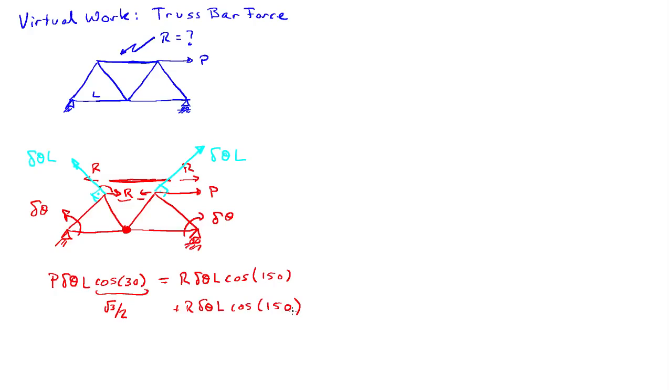And those two are going to add up together. So the cosine of 150 degrees is minus root 3 over 2. So clearing the delta thetas from both sides and the Ls, they all cancel out. I found out that R is equal to P over 2. So the force in the upper chord of this little structure here is half of the lateral force that I apply to it.